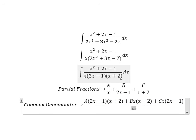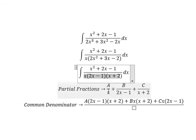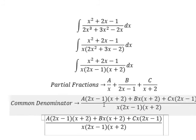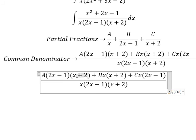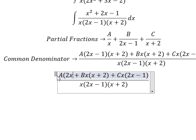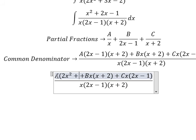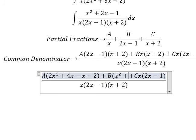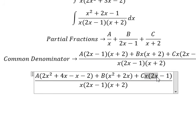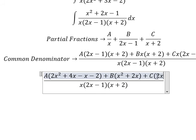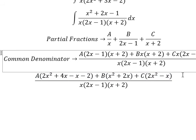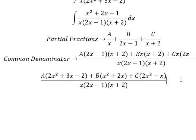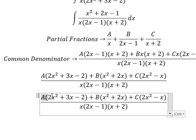So we will have the denominator here. Now we need to expand this. So we have 2s² plus 4s minus s minus 2. For the B term, we have s² plus 2s. For the C term, we have 2s² minus s. For s minus s, we have 3s. Now we need to arrange based on the terms of s.